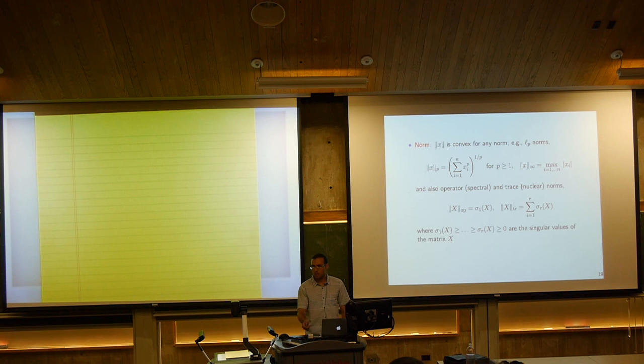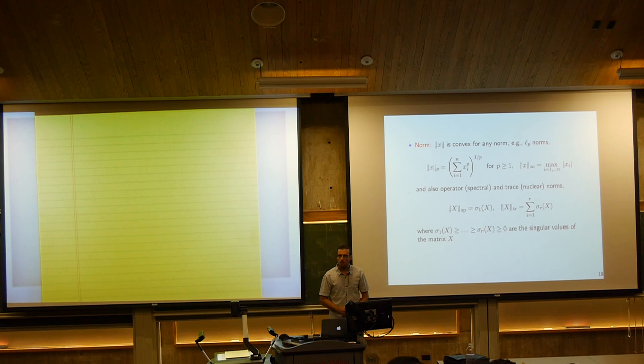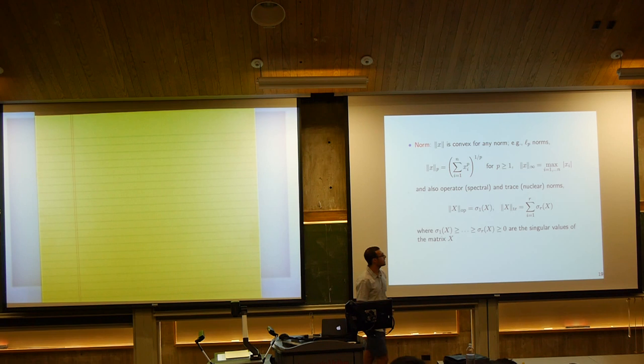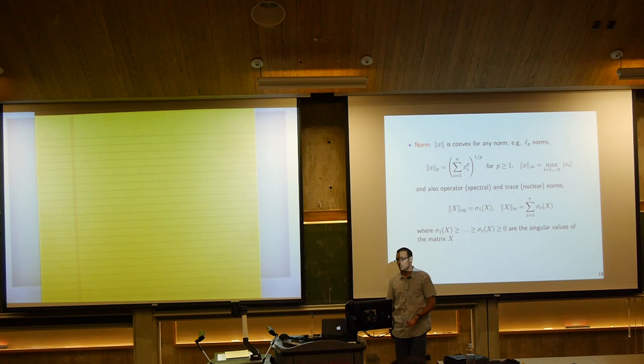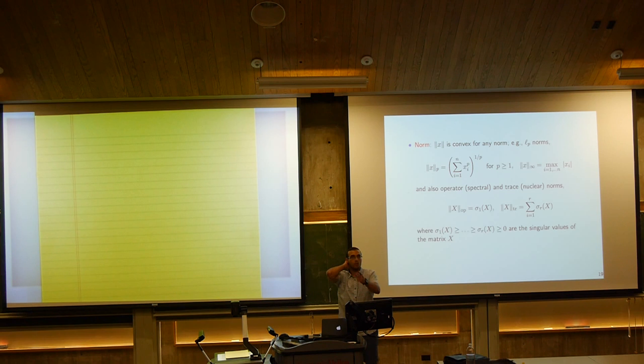Regarding the trace norm for non-square matrices: it's not easy to compute from the matrix entries directly — it requires knowing the singular values. That may cause some computational difficulties, but it is still well-defined. It's just the sum of the singular values.